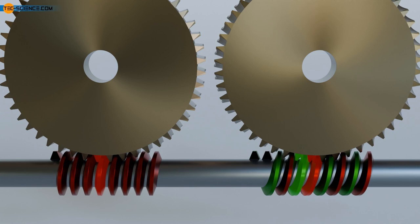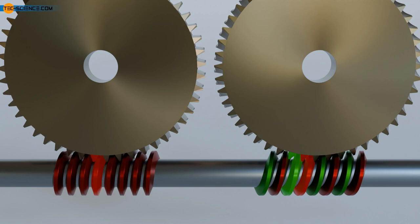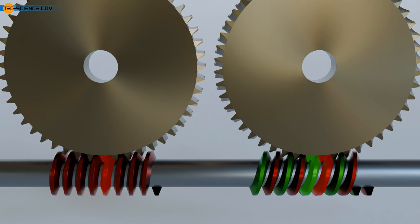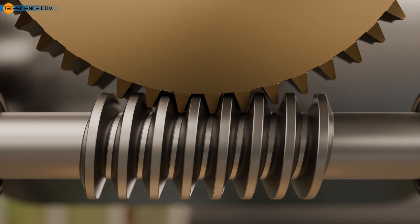The animation shows the comparison between a single-start worm and a double-start worm. Note that the worm gear meshing with the double-start worm rotates twice as fast as the worm gear of the single-start worm, as the single-start worm drive has a higher transmission ratio.